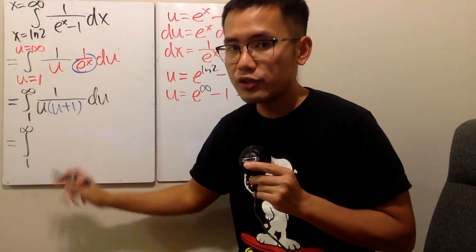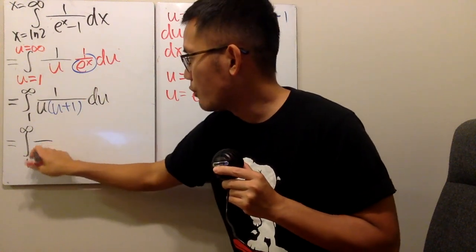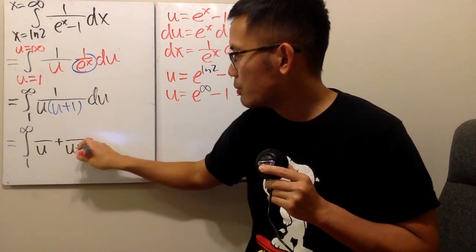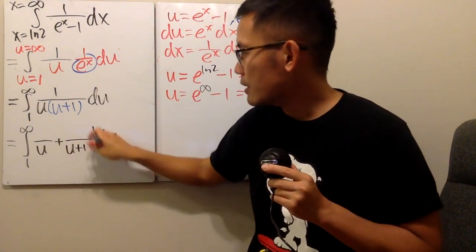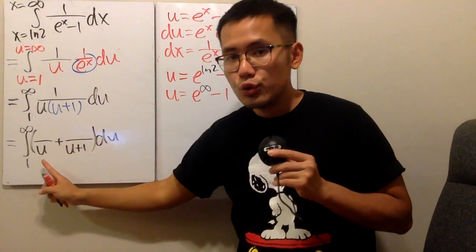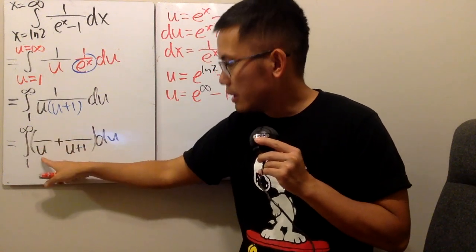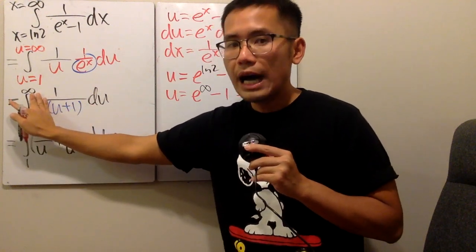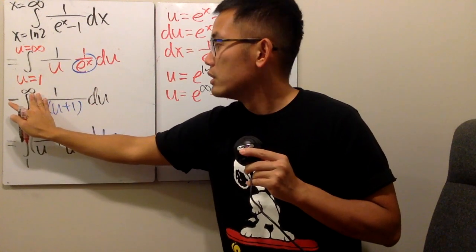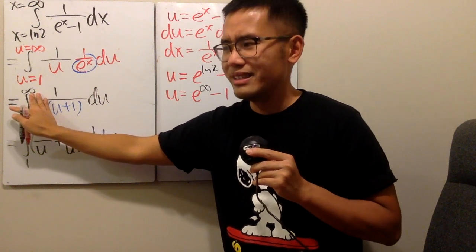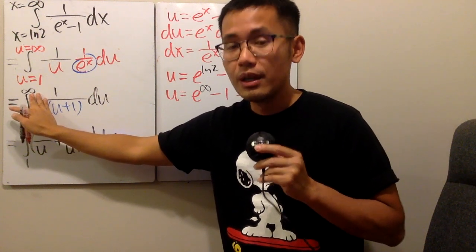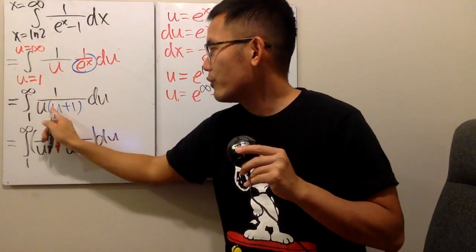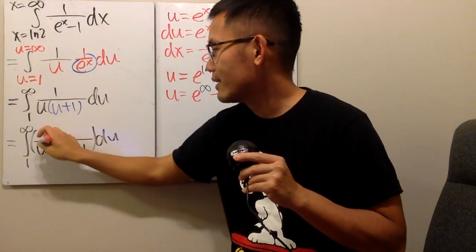For the first fraction, we will have some number over u. And then for the second fraction, is some other number over u plus one, like this. To figure out this number, the denominator is u. So, we go back to the original. You cover this up. And how can you make u equal to zero? u has to be zero. Then you put zero into this u. One over zero plus one is just one.